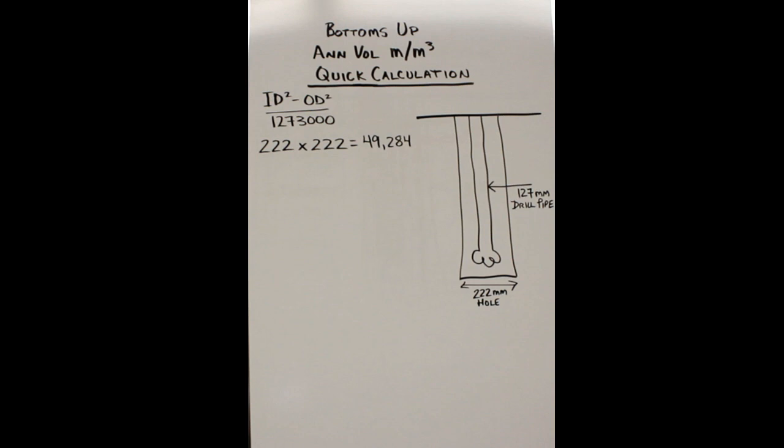49,284 is the answer. Now OD squared, take the 127 and times it by 127, and that equals 16,129. Take those two numbers and subtract them from each other, and it gives you this answer here.